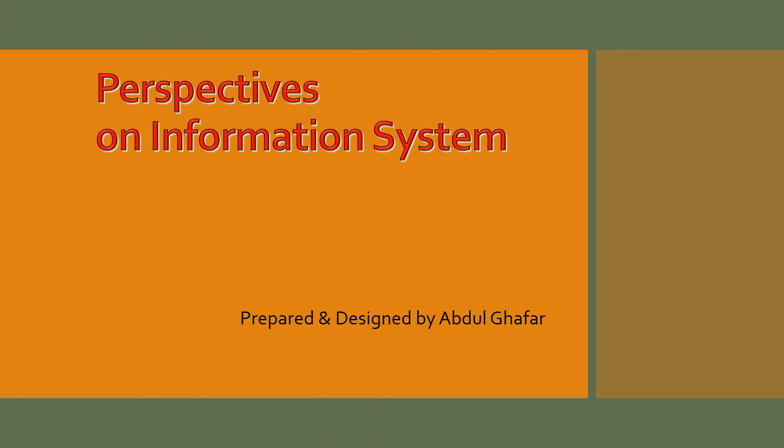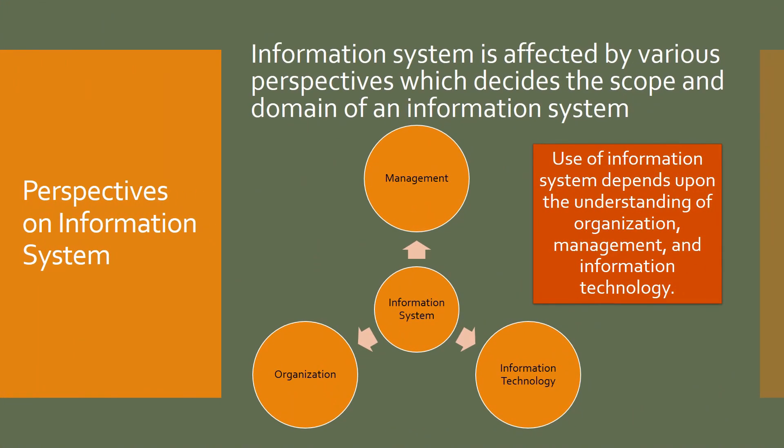Information systems within a business are mostly affected within three dimensions or perspectives. The scope or domain of an information system is defined by three major perspectives: first, organization; second, management; and third, information technology. The structure of the organization, how managers perform their tasks in doing business, or which technology is physically available to process data — all of these define the information system within the business.